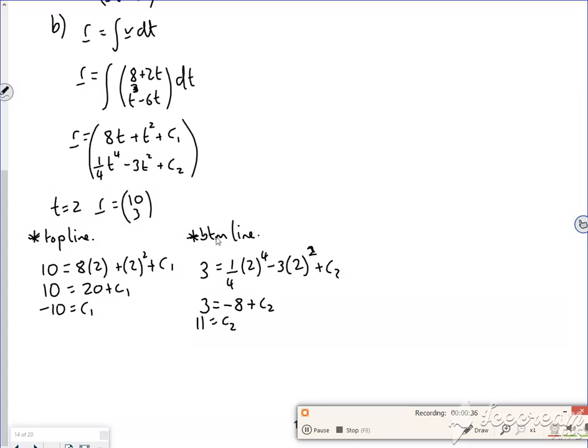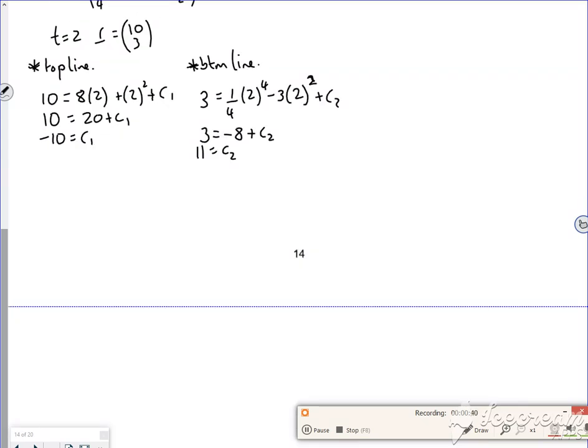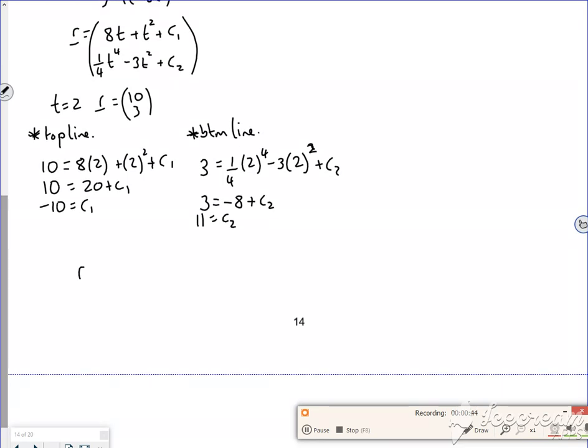Right, so those constants now I'm going to put into my equation. So I'll move it up a little bit more, but I want to see the equation. So R is 8T minus T squared plus C1, which is minus 10. And then I've got a quarter T to the 4 minus 3T squared plus 11. So that's my equation for my motion.